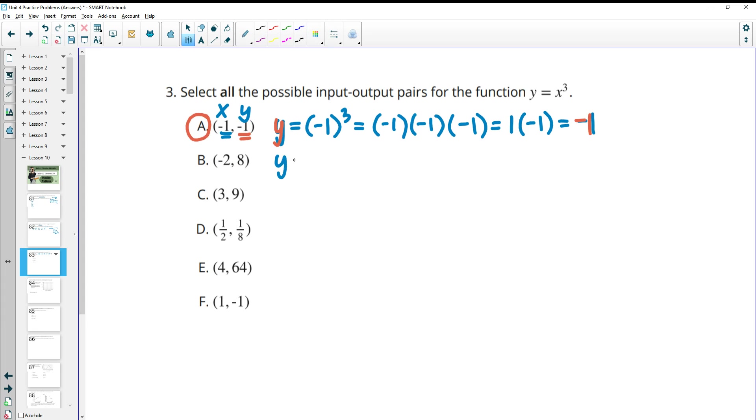So B has us putting in -2 cubed. So then we're going to have -2 times -2 times -2. So -2 times -2 gives us positive 4, and then we're multiplying still by this -2. That gives us -8. So this one tells us that when we plug in -2, we get back y = -8, which is not what they gave us. They told us that would be positive 8. So that one is false.